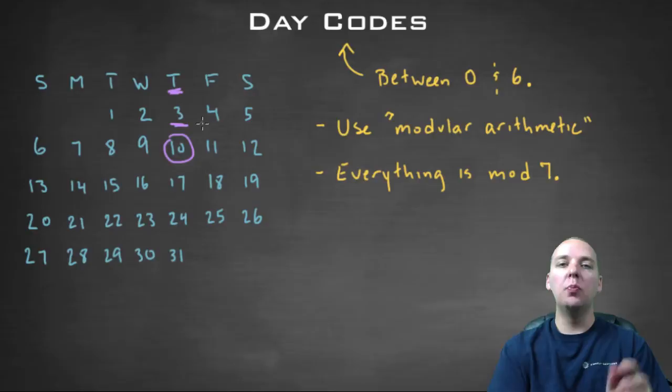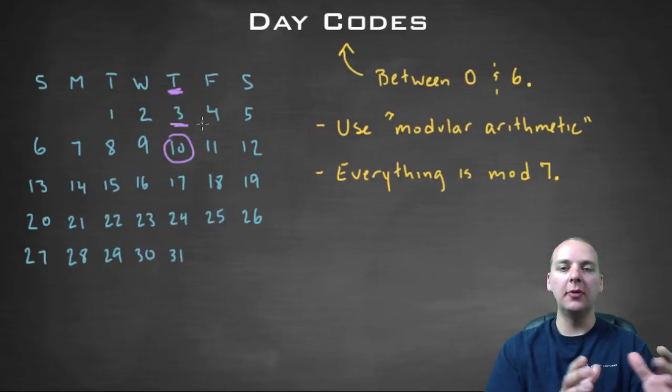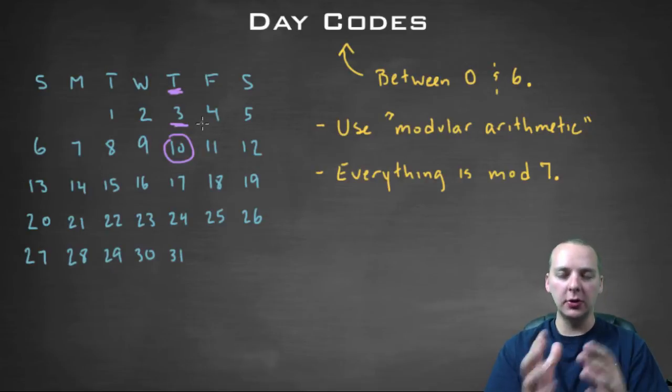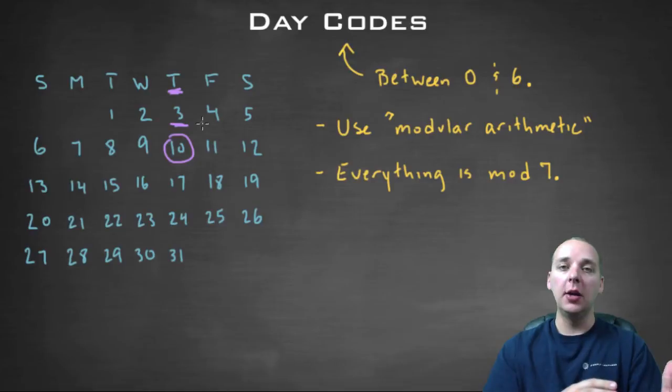This is known as modular arithmetic. When you take out multiples of a certain number to land back in a smaller set of numbers, this is called modular arithmetic. We use it a lot in number theory. We're not going to go into a lot of details about modular arithmetic. Everything we're going to do is modulo seven.